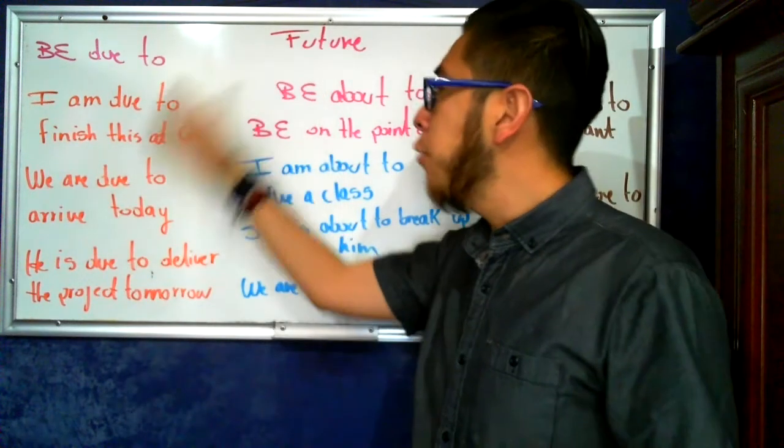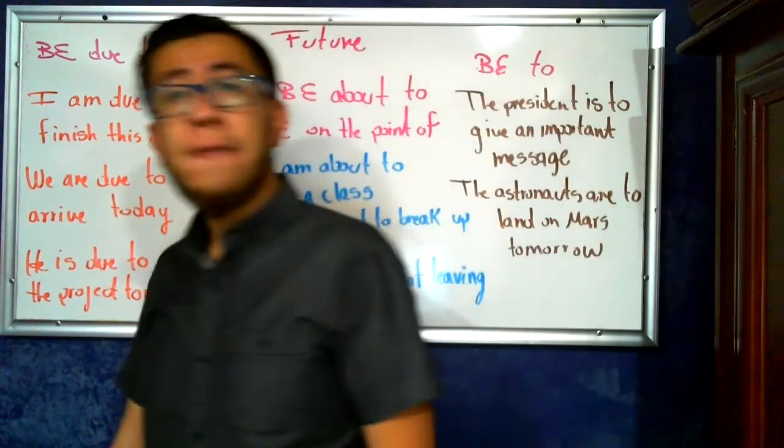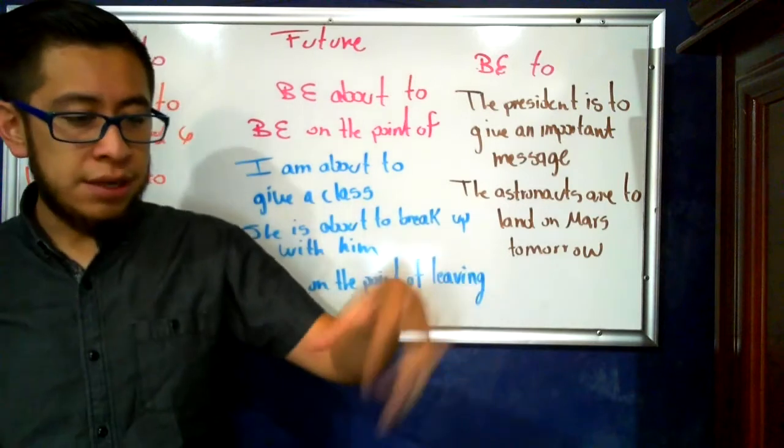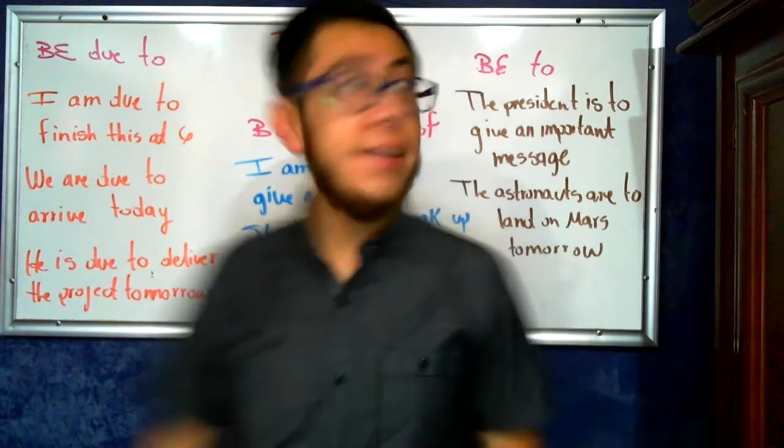So due to, it's only to talk about like a plan, like plans, that are supposed to happen in this order. I am due to finish this at six. We are due to arrive today. He's due to deliver the project tomorrow. If you have something that is planned, something that is arranged, you can use be due to to express that idea.